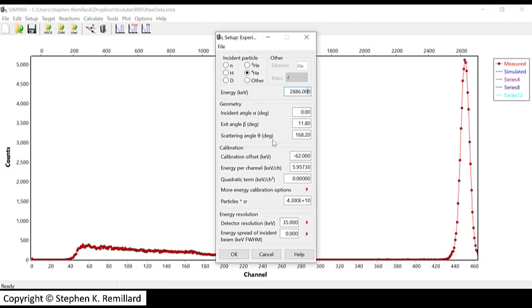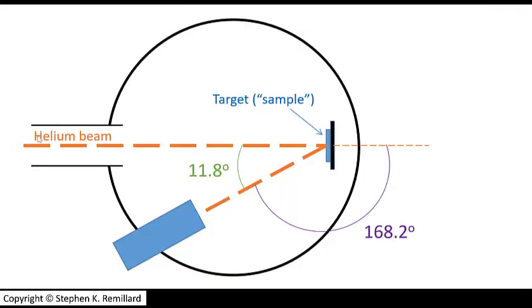The geometry inside the chamber is described in this next section. Incident angle is zero degrees in our experiment. The alpha particle beam is normal to the sample. Then there's the exit angle of 11.8, and the scattering angle of 168.2. It's no accident that those add up to 180 degrees. The beam comes down the beam tube, hits the sample normal, and backscatters it, where the alpha detector is fixed in place permanently at an angle of 11.8 degrees from that incident line, and so that never changes.